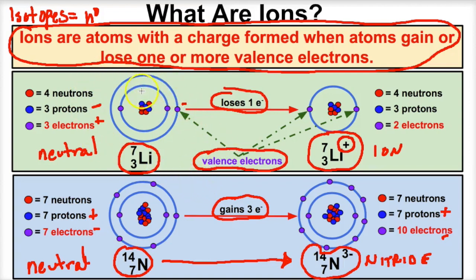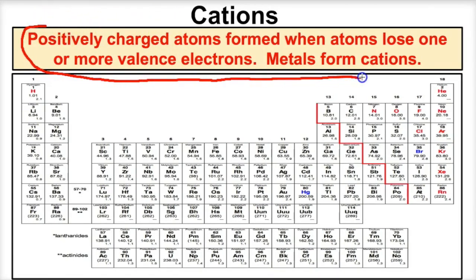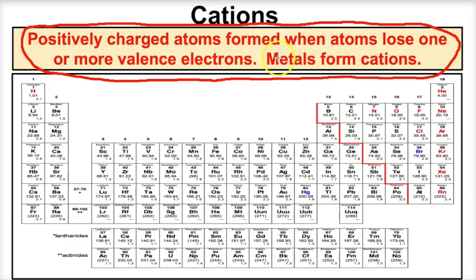Let's take a look at two types of ions: cations and anions. Cations are positively charged ions — atoms formed when that atom loses one or more valence electrons. When an atom loses one or more valence electrons, it becomes more positive and forms what we call a cation. What types of atoms on the periodic table form cations? The metals form cations.